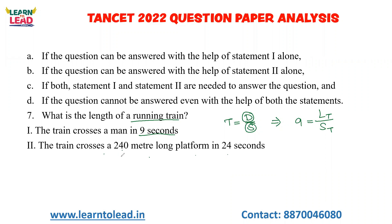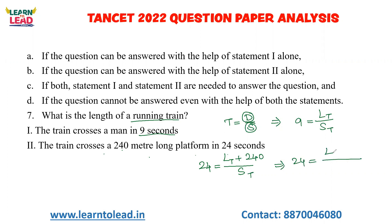From statement 2: 24 equals distance divided by speed of train, where distance is length of train plus length of platform (240 meters). So: 24 equals (length of train + 240) divided by speed of the train. From statement 1, speed of the train equals length of the train divided by 9.